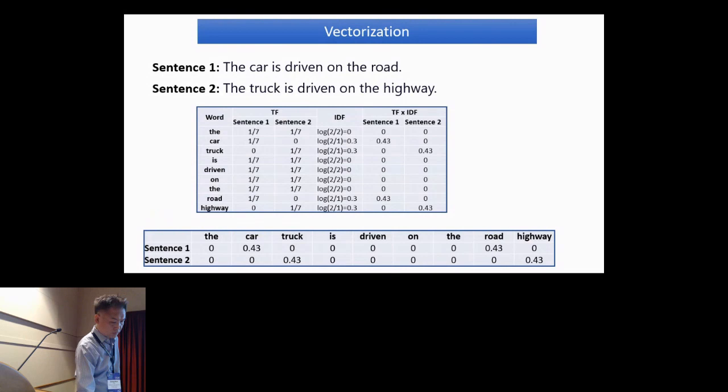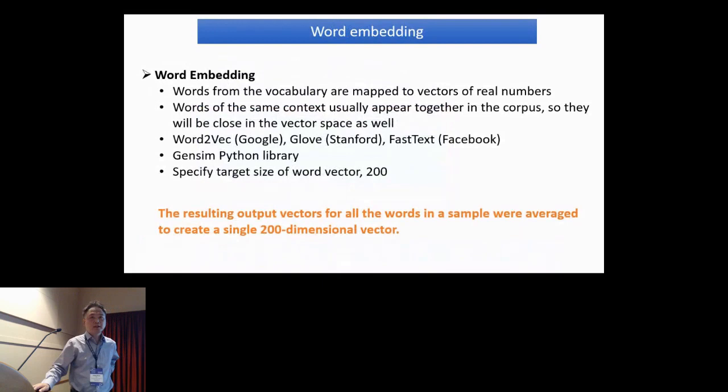In this example there are two sentences, so let's make a TF-IDF table. The first column lists all words from two sentences. In TF computation, the numerator is the number of words appearing in that sentence and the denominator is the total number of words in each sentence. The IDF uses logarithmic scale - the numerator is the total number of sentences, here two, and the denominator is how many sentences include the specific word. Then TF times IDF is used as quantitative features.